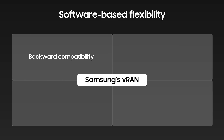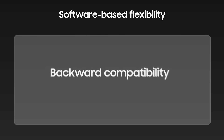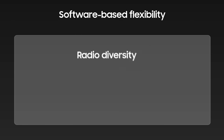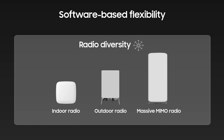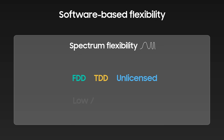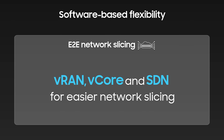In summary, operators are experiencing the major benefits of Samsung's virtualized RAN. Samsung's V-RAN supports 4G and 5G simultaneously through a single platform and can also provide backward compatibility as other technologies are supported in the near future. Samsung's V-RAN supports interworking with diverse radio products including radios, massive MIMO radios, and indoor solutions, as well as all frequency bands such as FDD, TDD, low, mid, and high band, to provide flexible deployment options. Furthermore, with Samsung's network automation solution, the entire end-to-end network including the V-RAN, V-Core, and SDN can be virtualized to enable easier network slicing.